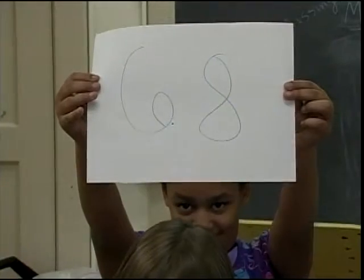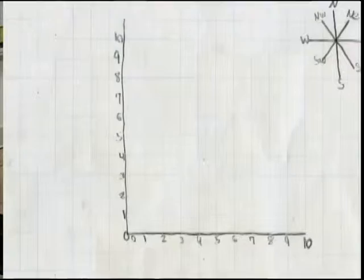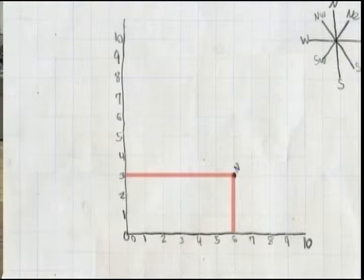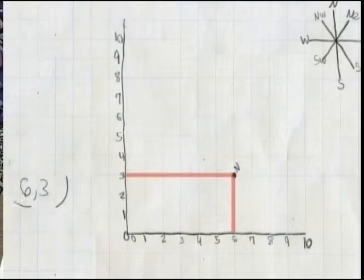One person is going to draw a secret coordinate that the other person cannot see, and the other person that is trying to figure it out has to guess coordinates and put it on it. So I'm going to guess 6, 3. So on the side I write 6, 3.